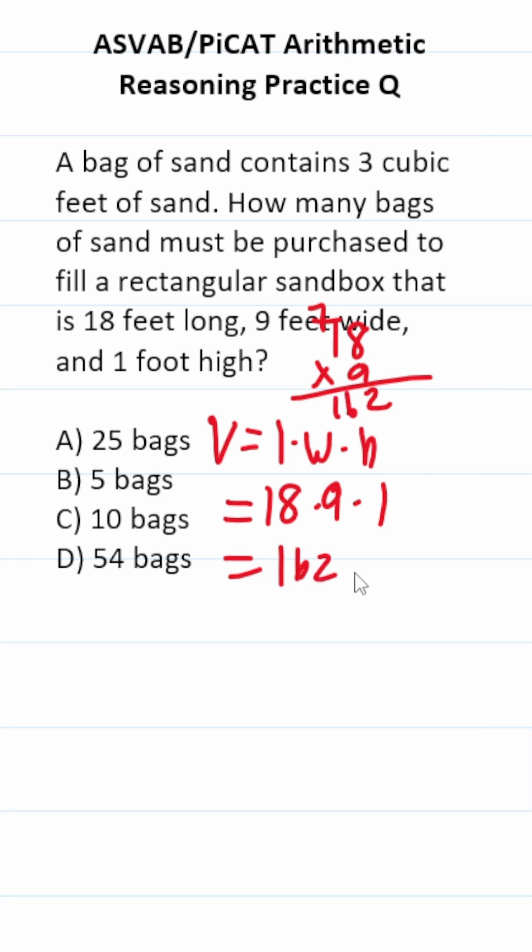So this is going to be 162 cubic feet of sand. Let's do 162 divided by 3. Each bag of sand contains 3 cubic feet.